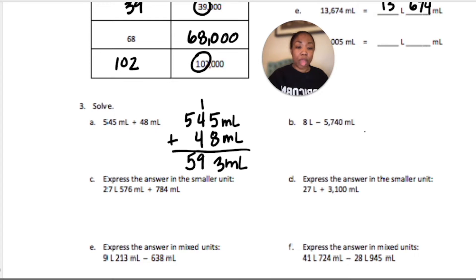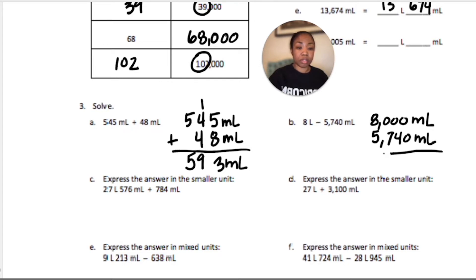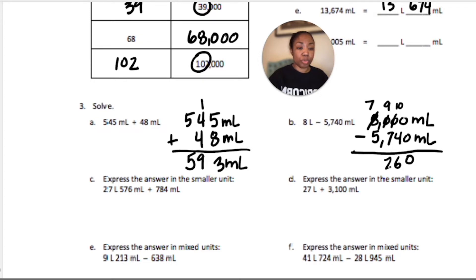For B, we're subtracting, so I'm going to put these both in smaller units. If I have 8 liters, I have 8,000 milliliters minus 5,740 milliliters. I can't do 0 minus 4, so I cross out the 8 — it becomes 7; the 0 becomes 10, then 9, and the next 0 becomes 10. 0 minus 0 is 0, 10 minus 4 is 6, 9 minus 7 is 2, and 7 minus 5 is 2. That gives 2,260 milliliters, which is the same as 2 liters, 260 milliliters.